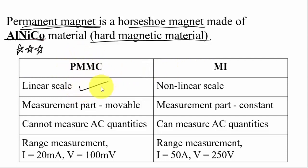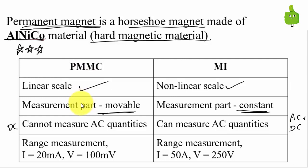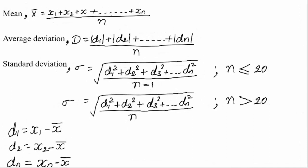Comparing PMMC and moving iron: PMMC uses a linear scale; moving iron uses a non-linear scale. The moving part in PMMC is movable; in MI it is fixed. PMMC can measure only DC quantities; moving iron can measure both AC and DC. Range is restricted in PMMC — maximum current up to 20 mA and voltage up to 100 mV. Moving iron can measure current up to 50 A and voltage up to 250 V, so moving iron is preferred for most applications.